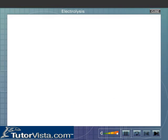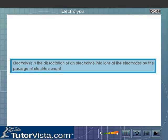Electrolysis. Electrolysis is the dissociation of an electrolyte into ions at the electrodes by the passage of electric current.